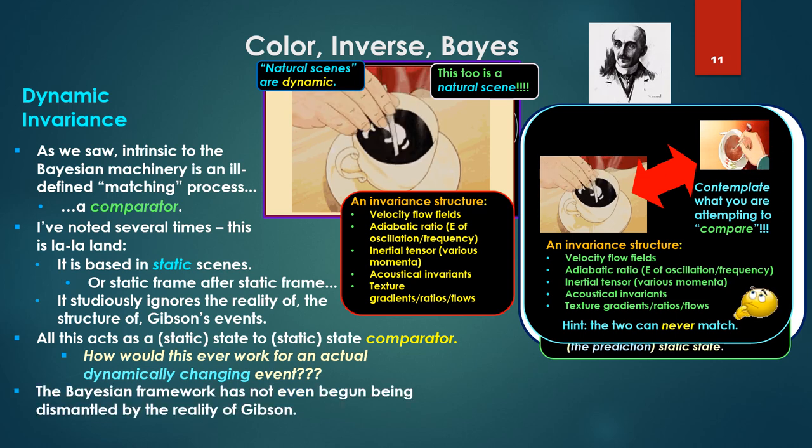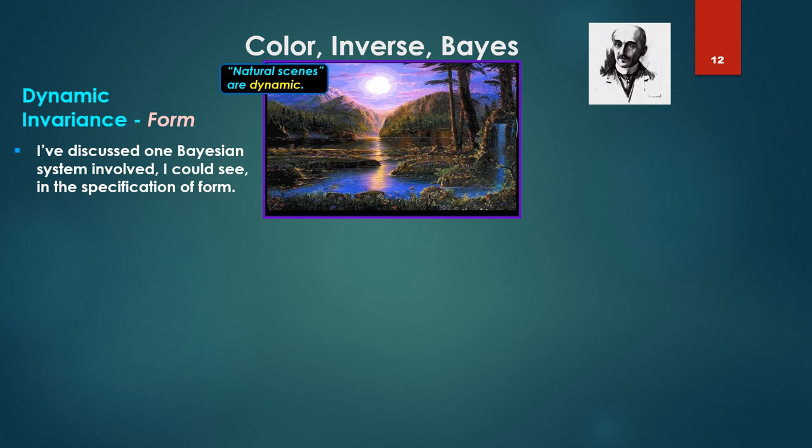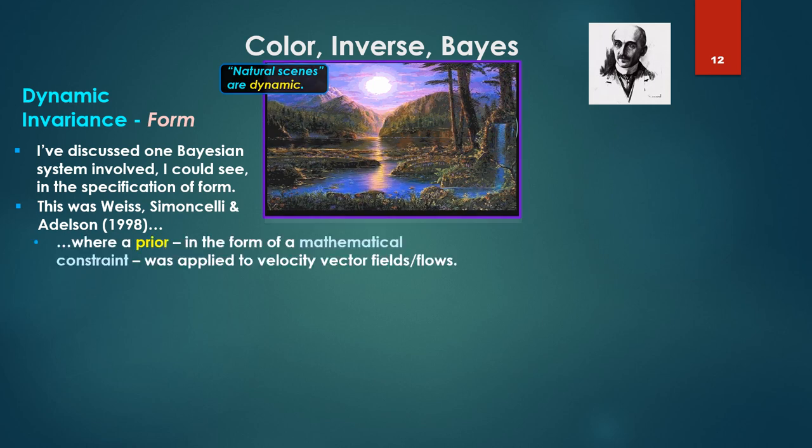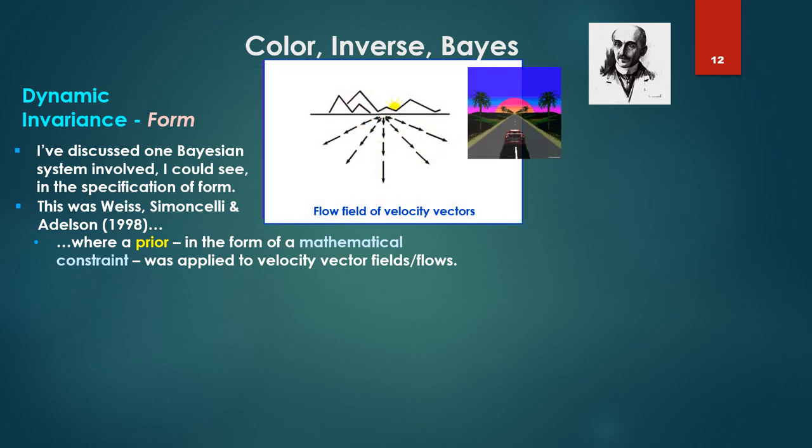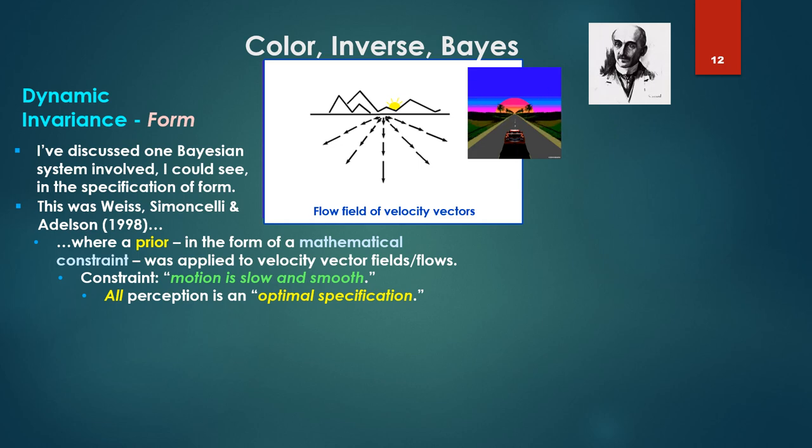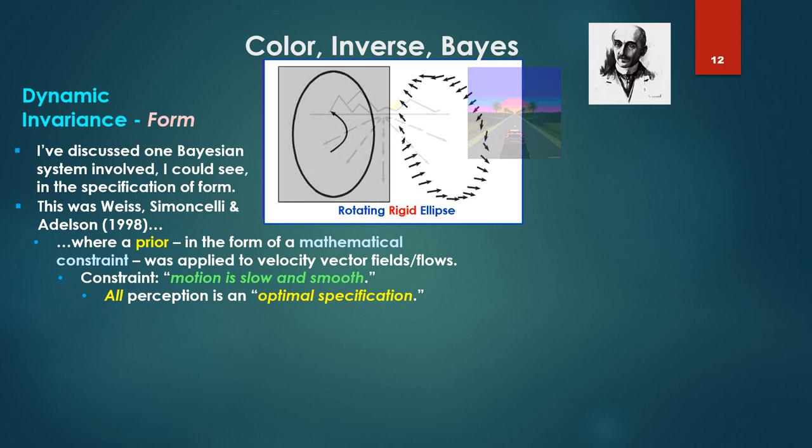The Bayesian framework has not even begun being dismantled by the reality of Gibson's events. I've discussed one Bayesian system involved that I thought might work, I could see in the specification of form. This was Y.C. Weiss, Simoncelli and Adelson in Nature Neuroscience in 1998, where prior in the form of a mathematical constraint was applied to velocity vector fields or flows. Up there I'm showing as usual our velocity vector field, how it looks when we're driving.